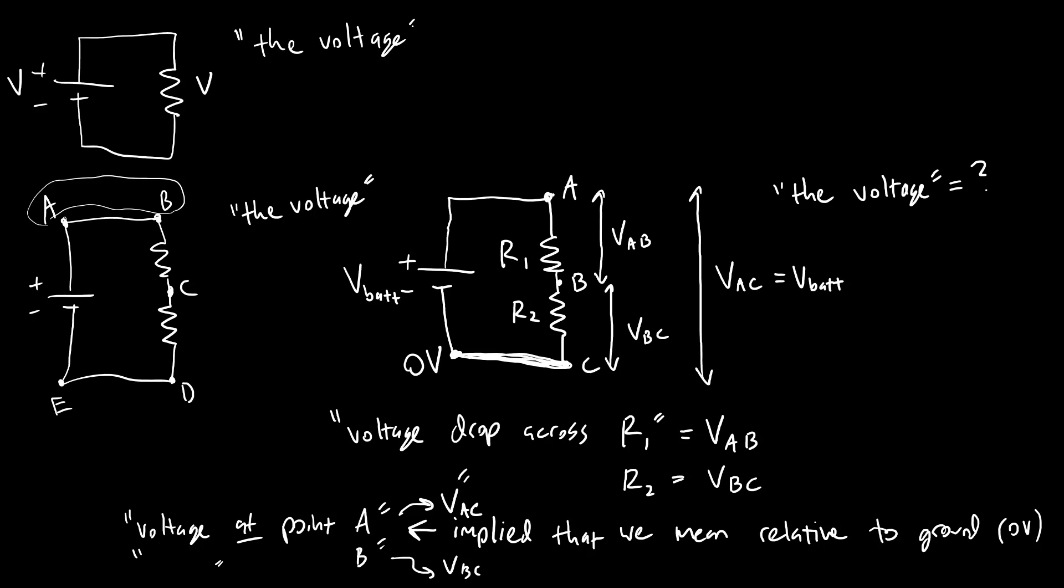you want to make sure you don't solve for the voltage drop across both resistors or VA, which is referenced to ground. That's going to give you the voltage drop across R1 and R2. You need VAB.